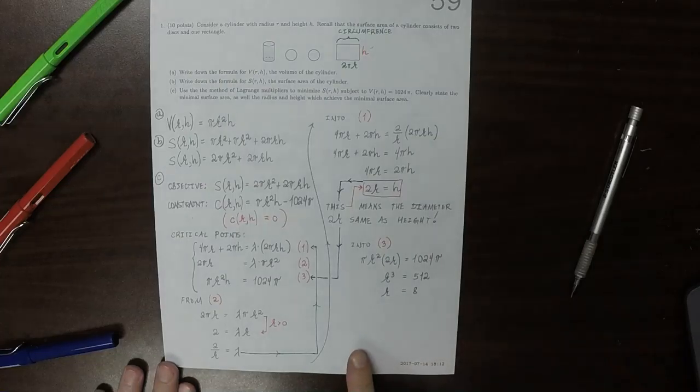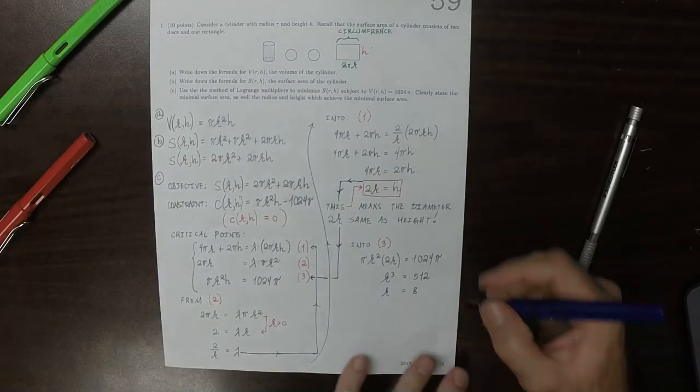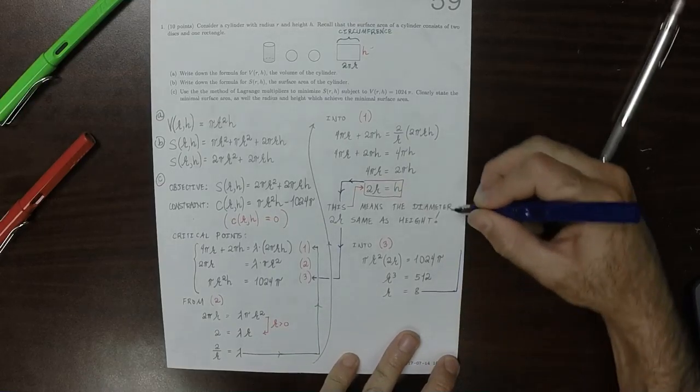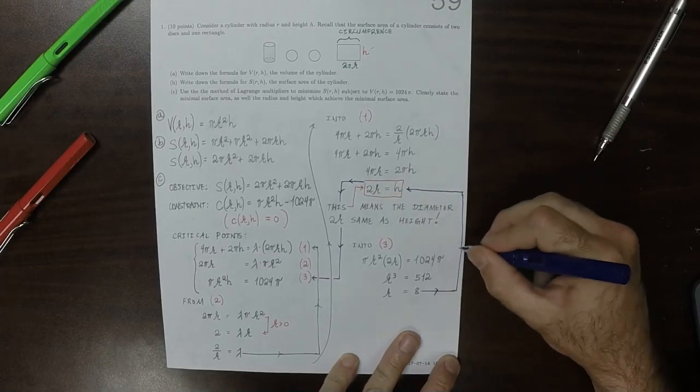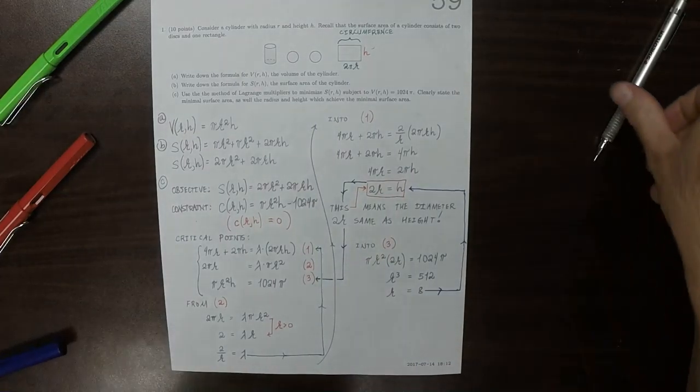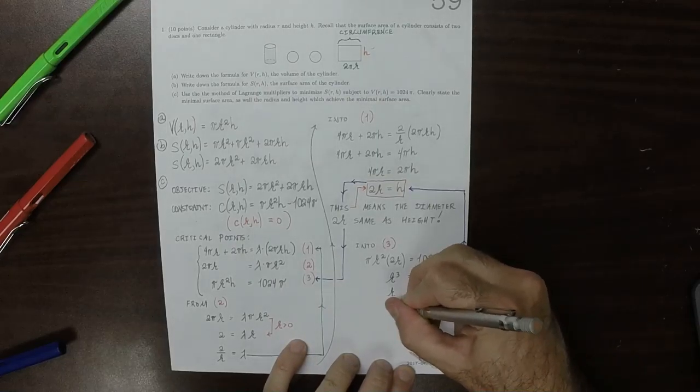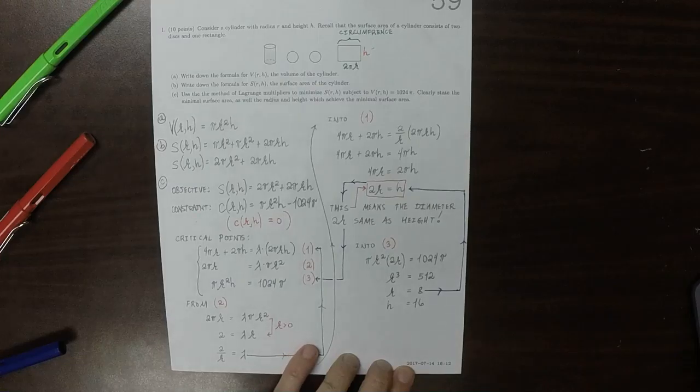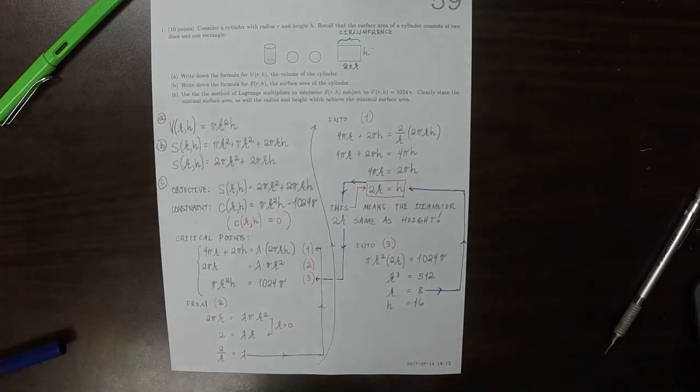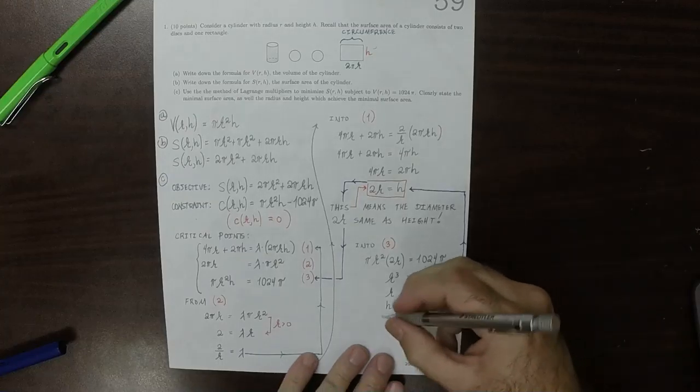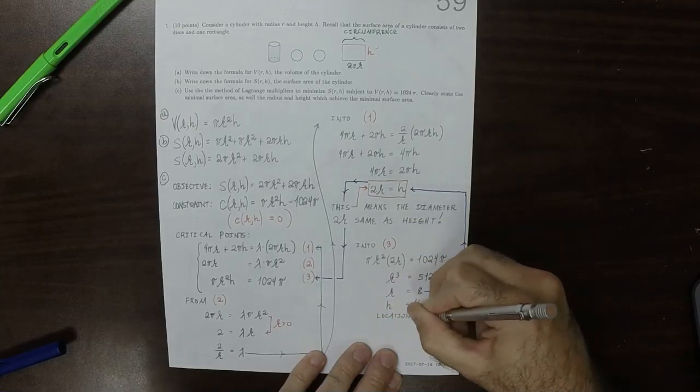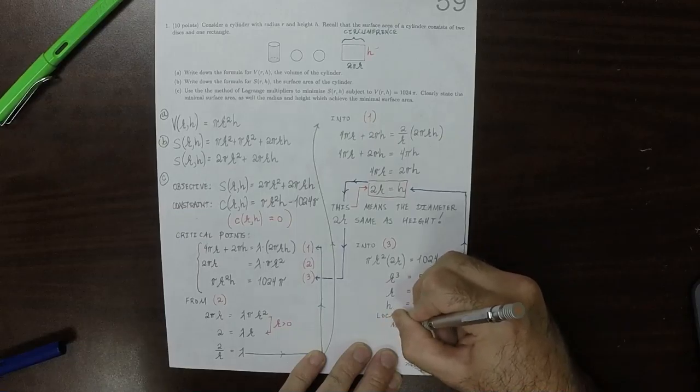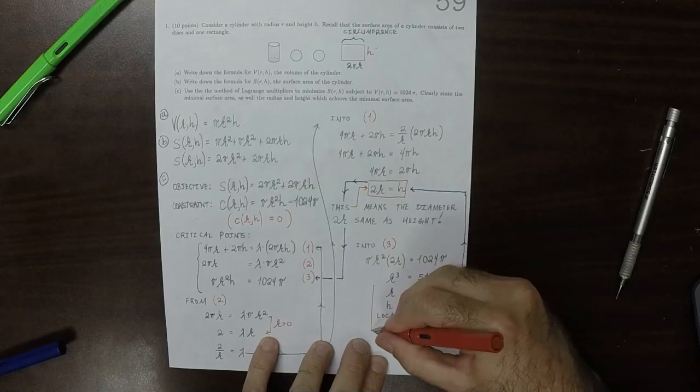And now we could take and plug it into this one up here to determine h. So, if r is 8 that means that h is 16. So, this here, 8 and 16, is the location of the minimum. So, that's how you get the minimum.